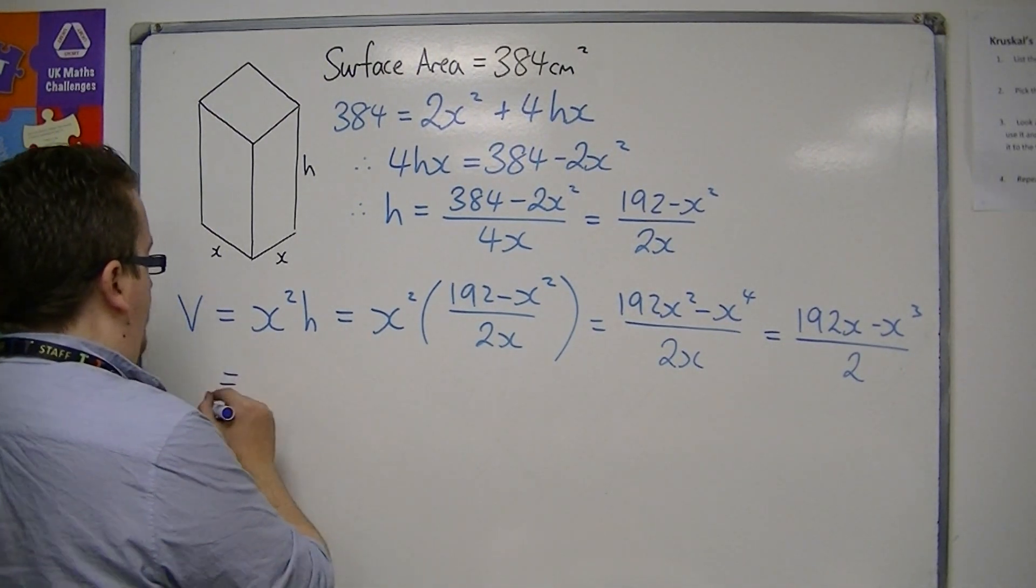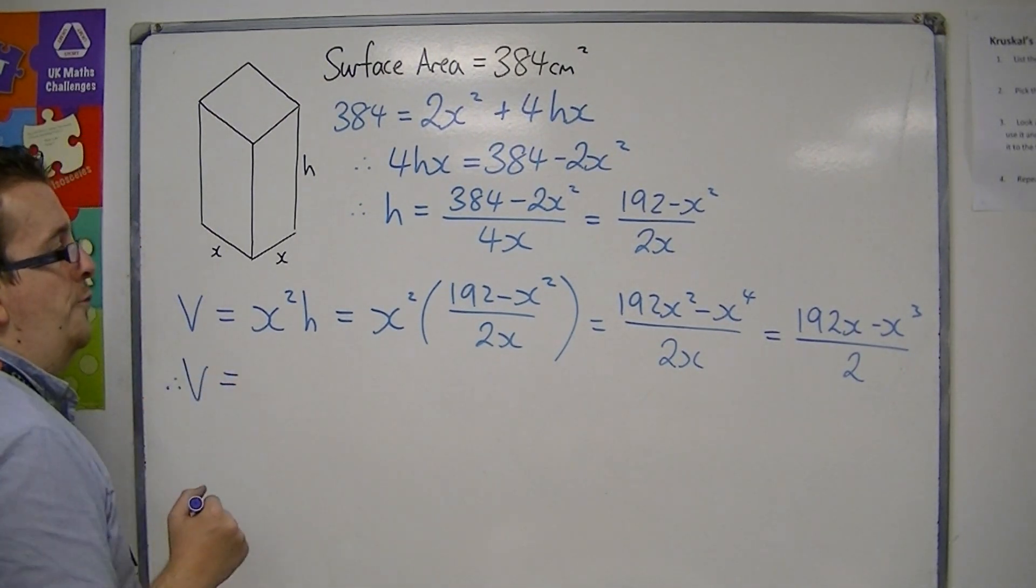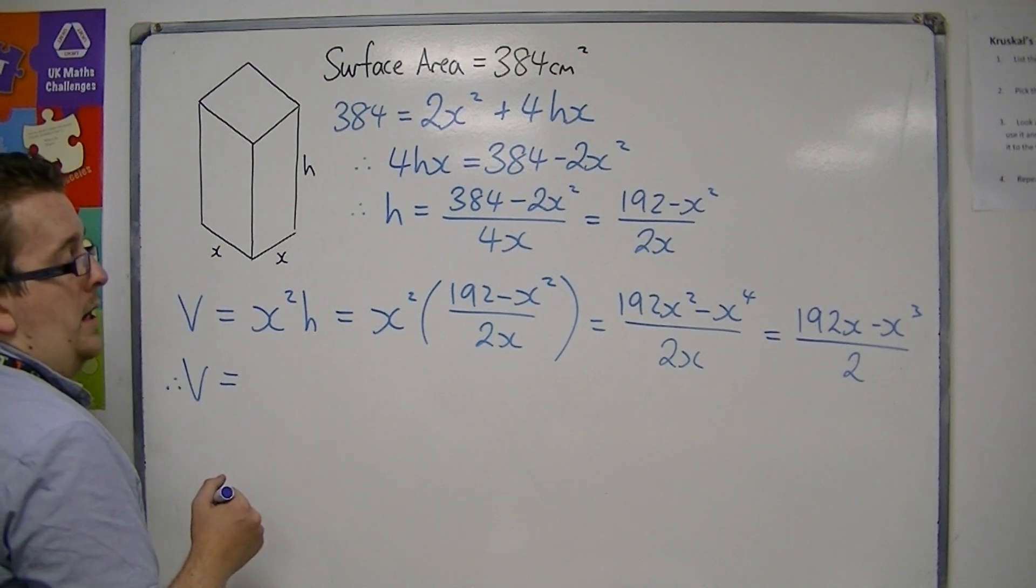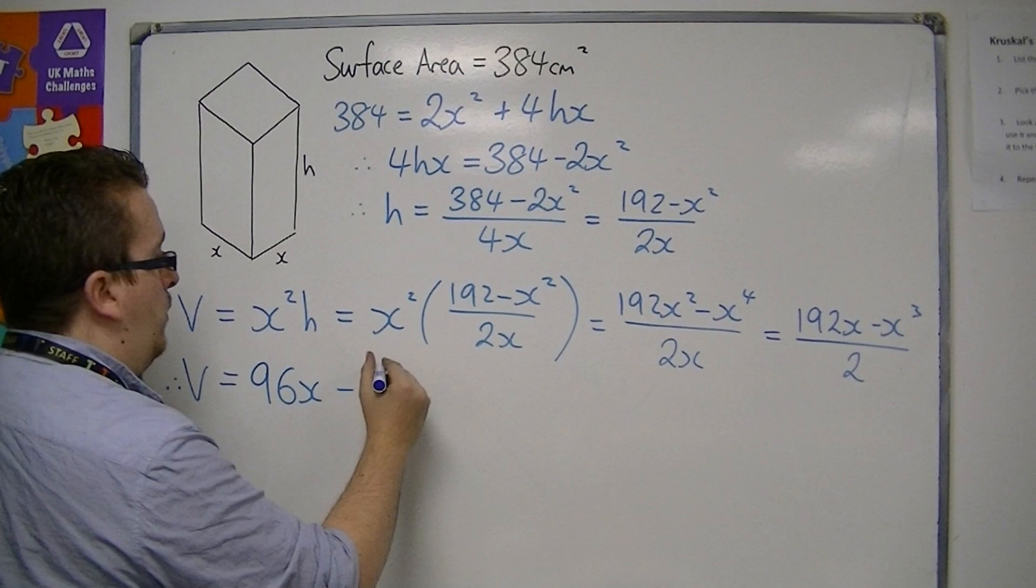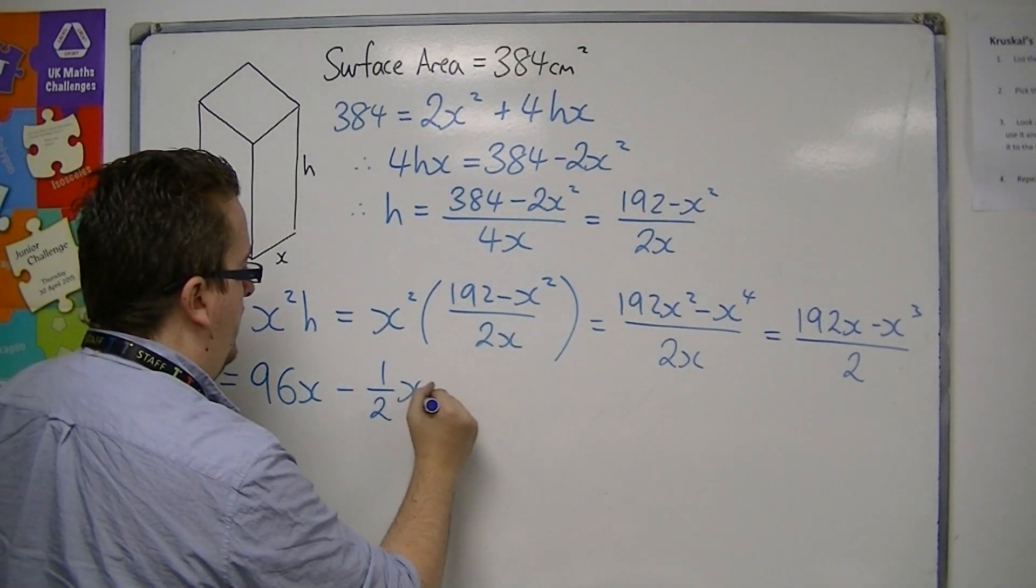Let's simplify that even further. So V can be 96x take away 1 half x cubed.